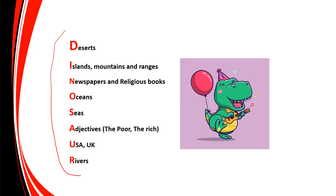This slide will help you remember when to use the definite article 'the'. I have used an acronym: DINOSAUR. D — before deserts, the Sahara. I — before groups of islands, mountains and ranges: the Andaman and Nicobar, the Himalayas. N — before newspapers and religious books: the Hindu, the Times of India, the Bhagavad Gita. O — before oceans: the Pacific Ocean. S — before seas: the Black Sea, the Red Sea. A — before adjectives representing a group: the poor, the rich. U — before groups of countries: the USA, the UK. R — before sacred rivers: the Ganga, the Yamuna. If you remember the word DINOSAUR, all the rules for when to use the definite article will be easy to remember.